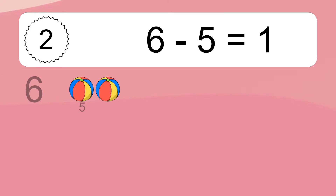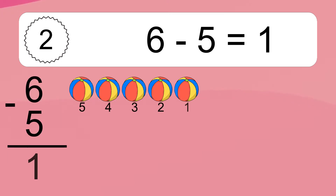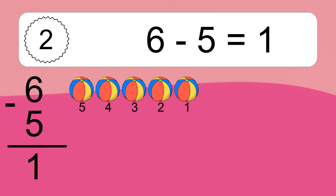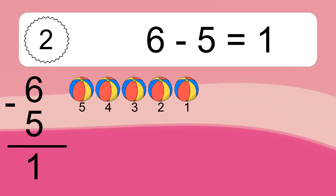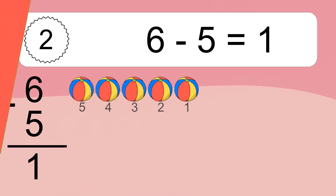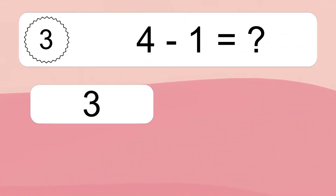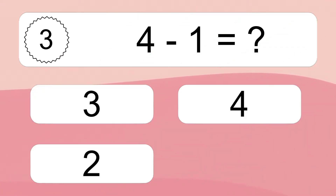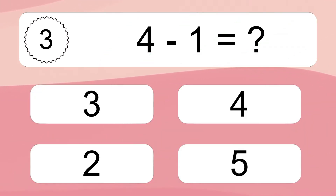6 minus 5 equals what? 6 minus 5 equals 1. Let's count it. 5, 4, 3, 2, 1.